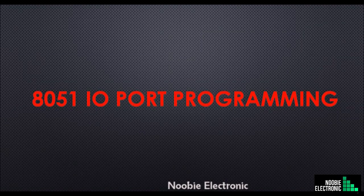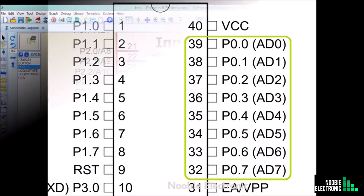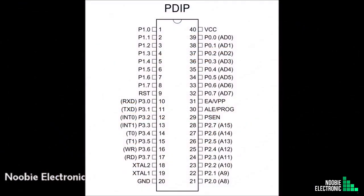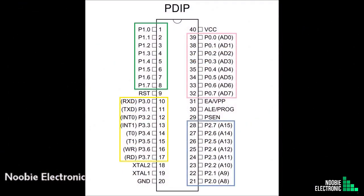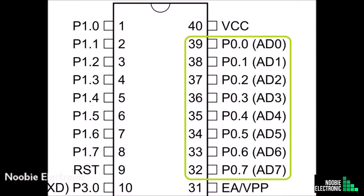Assalamu alaikum and welcome back. In this lecture we shall learn about 8051 IO ports. A port is usually a set of 8 pins, and we call them IO because we can configure them either as input or output. The 8051 has 4 GPIO ports, and each port has eight pins, while each pin may have one or more than one function. We will see them one by one. Now let's have a look at IO port 0.